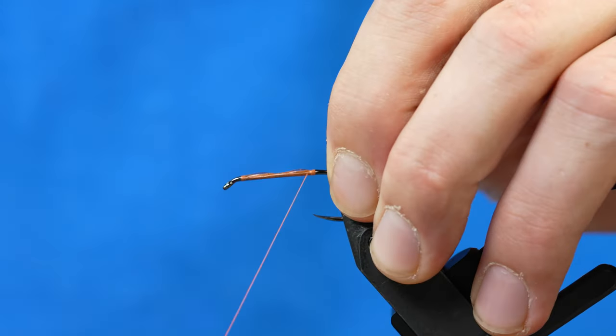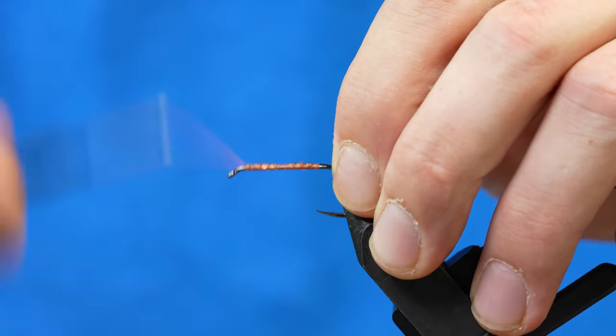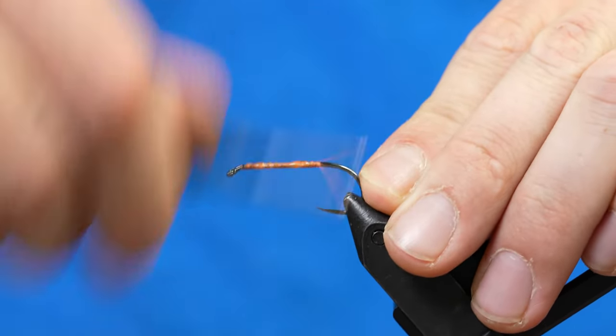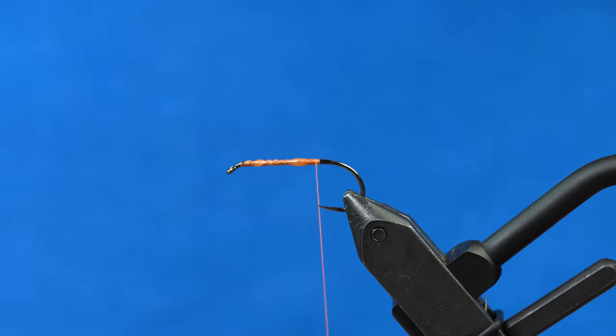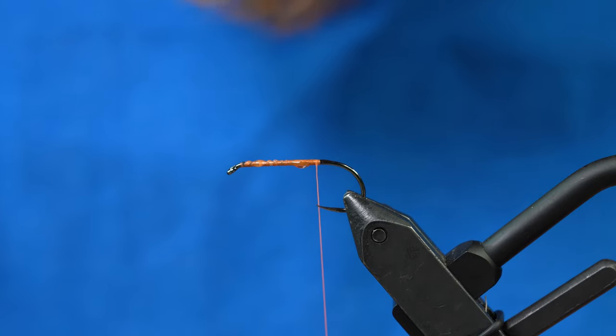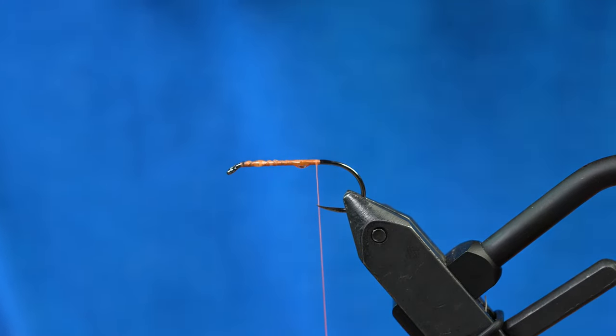We'll do big wraps going forward with a nice tight core so our little foam bodies will sit centered on the shank of the hook. And I'm going to punch some six mil tan foam with the Chernobyl punch.